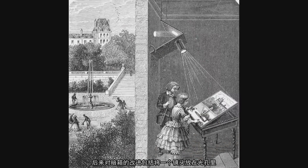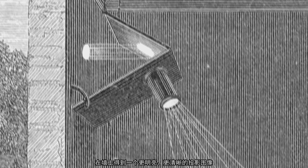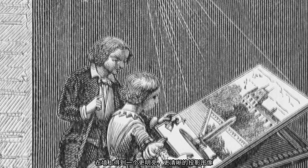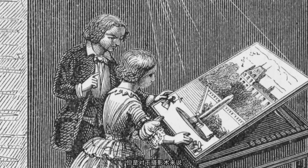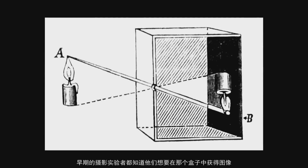Later improvements of the camera obscura included putting a lens in the hole so that the light could be focused, giving a brighter and more focused image projected on the wall. But for photography, the camera is essentially a box, and the early experimenters with photography all knew that they wanted to make images in that box.